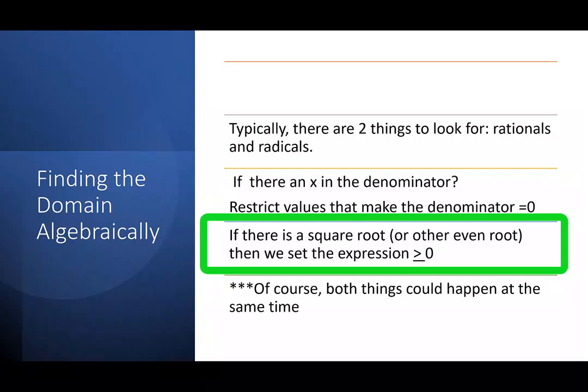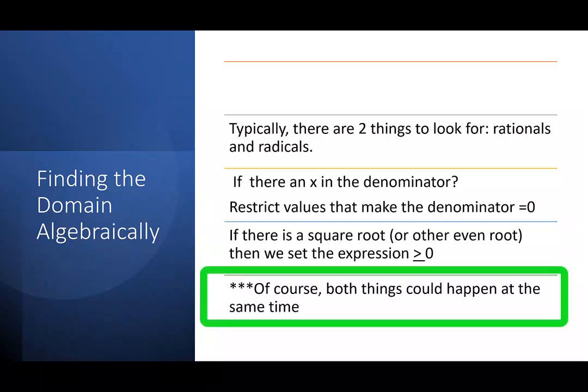If there is a square root or any other even root, then we need to set the expression greater than or equal to zero because we can't take an even root of a negative number. Of course, both things can happen at the same time, and that would switch to an inequality that is strictly greater than zero instead of greater than or equal to.